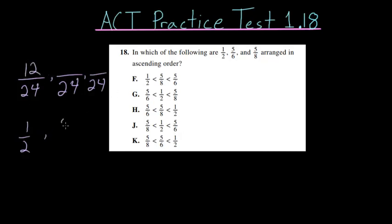Now, for the fraction 5 sixths, we multiplied the denominator 6 by 4 to get it to 24. So we also have to multiply the numerator 5 by 4, which is equal to 20.